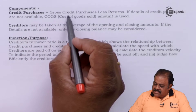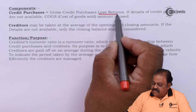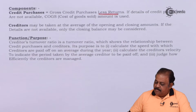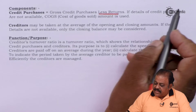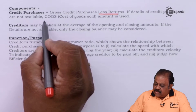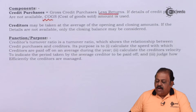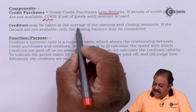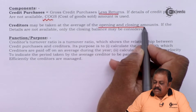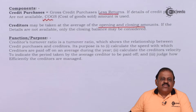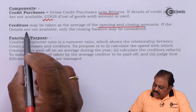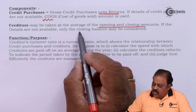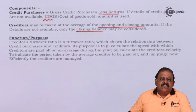Components: credit purchases means gross credit purchases less purchase returns. If details of credit purchases are not available, the cost of goods sold amount is used. Creditors may be taken at the average of opening and closing amounts — that is, opening creditors plus closing creditors divided by 2. If details are not available, only the closing balance may be considered.